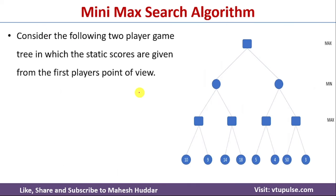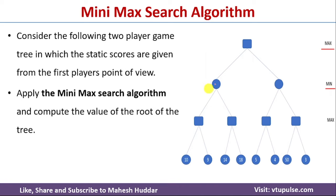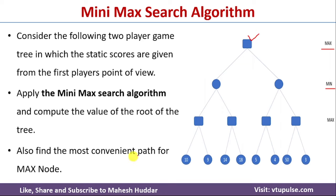We have been given a two-player game tree in which the static scores are given from the first player's point of view. There are two players: one is Max, another one is Min. The scores are assigned with respect to the first player, that is Max. Given this two-player game tree, we need to apply the minimax search algorithm, compute the value of the root node, and find the most convenient path that Max can follow to win the game.